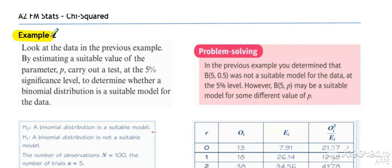Now consider Example 2. In the previous example, we decided that the binomial distribution was not a suitable model for the data, but it might have been the case that another binomial was suitable. We might have just got the value of p wrong.